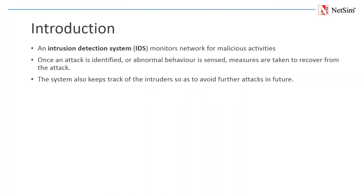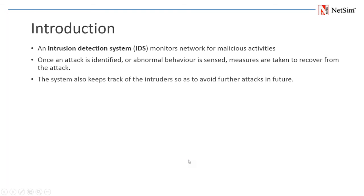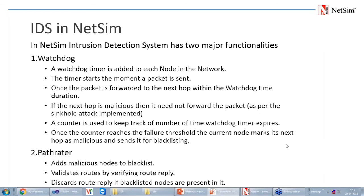We have now shown a sinkhole attack, and let us look at how to program a detection and prevention mechanism. One of the tools for prevention of sinkhole attacks is IDS — intrusion detection system. IDS is used to detect and deflect attacks or unauthorized use of systems, networks, and related resources. In our case, IDS is implemented to identify intruders performing sinkhole attacks and prevent them from further attacks. The IDS implemented in NetSim consists of two components: the watchdog algorithm and the pathrater algorithm.